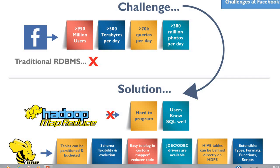The ability of SQL to satisfy most analytic requirements combined with the scalability of Hadoop gave birth to Apache Hive, which allowed performing SQL-like queries on data present in HDFS. The Hive project was open-sourced in August 2008 by Facebook and is freely available as Apache Hive today. With Apache Hive, tables can be partitioned and bucketed, the schema is flexible and can evolve, and it is easy to plug in custom mapper and reducer code.